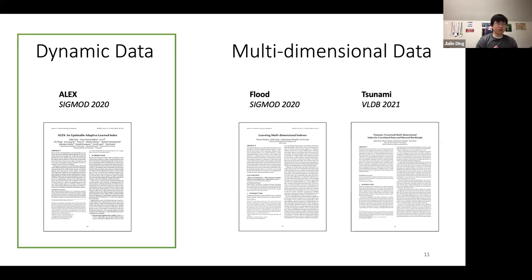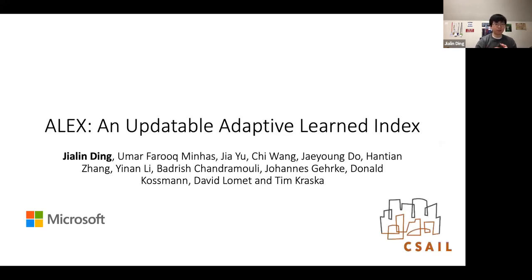Today I'm presenting two projects that try to address these limitations: two learned indexes that handle dynamic data and multi-dimensional data. The first, which I'll focus most of the time on, is ALEX — a learned index for dynamic data, initially published at SIGMOD last year. ALEX is a project that started in 2018 when I was an intern at Microsoft Research, and we've continued working on it after publication, adding new collaborators including Kyle who interned with us last summer.